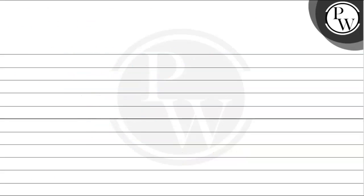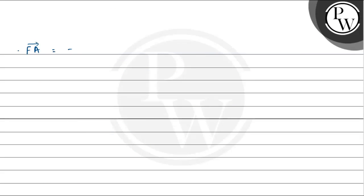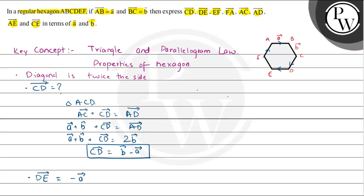Now we have to evaluate FA vector. As we saw in the BC and FE case, we can also see that FA vector is antiparallel to CD vector. Since CD vector was b - a, it implies FA vector = minus of CD vector, which gives FA vector = minus(b - a) = a vector minus b vector.